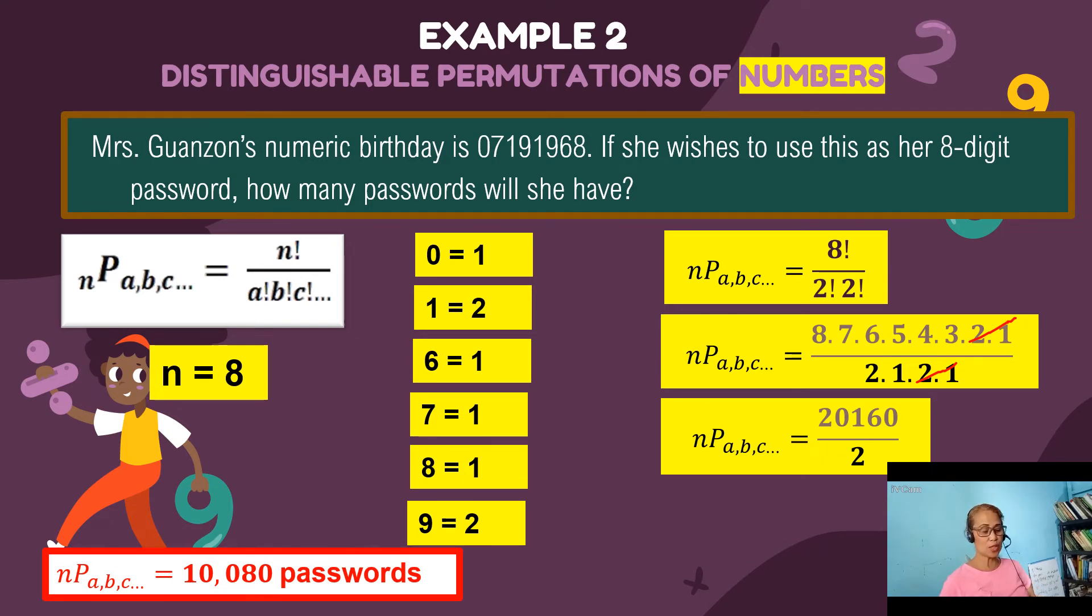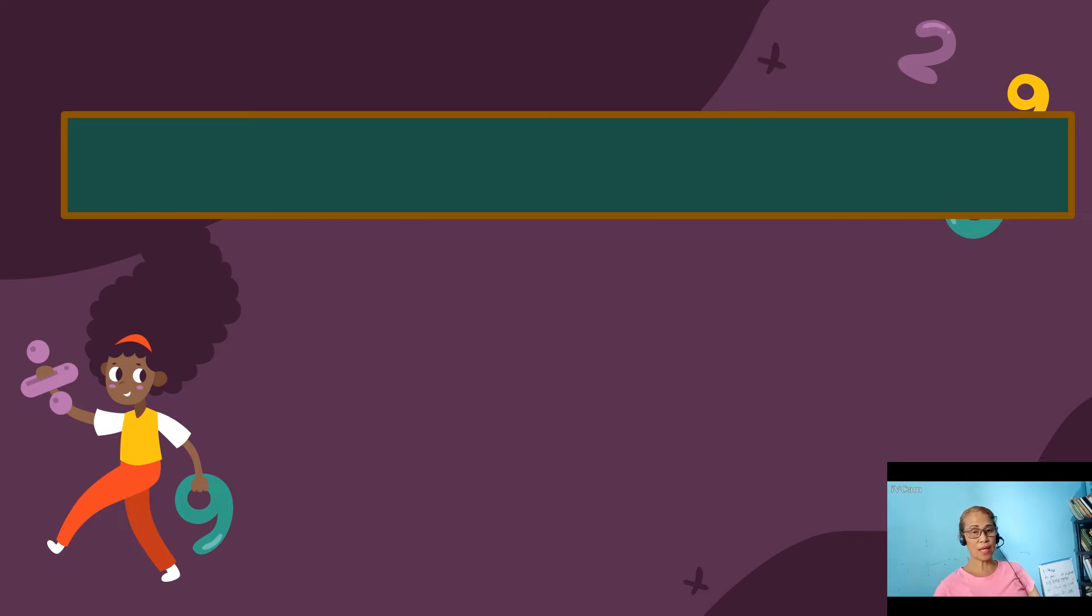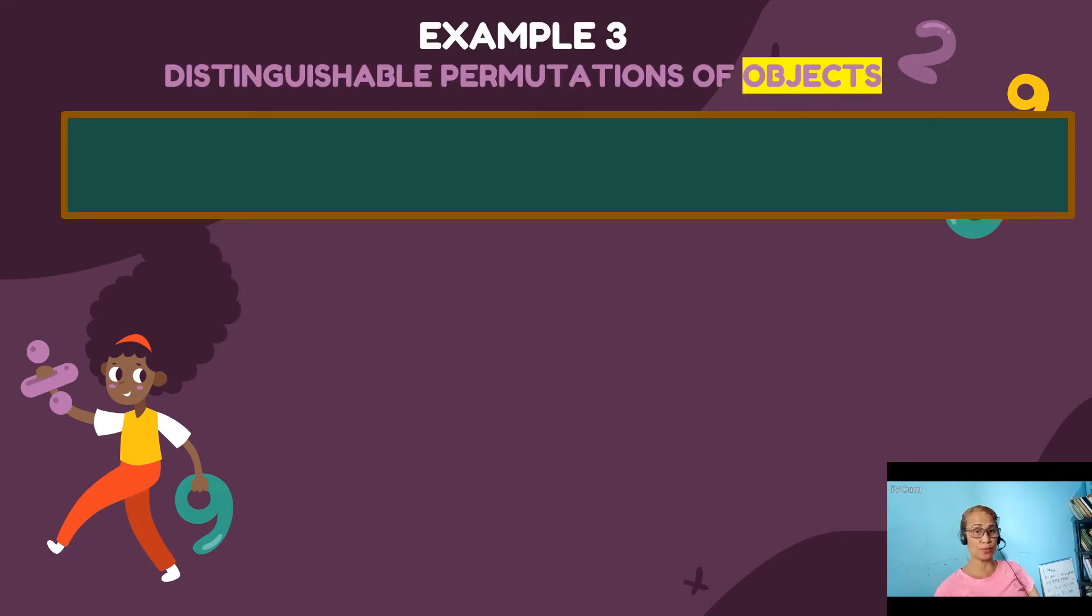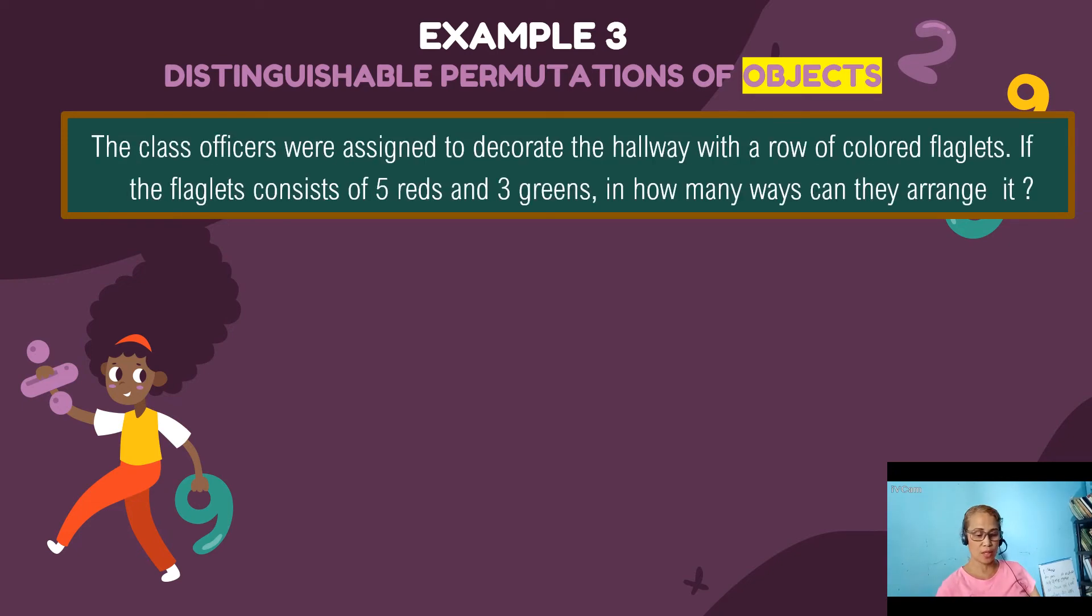So let's move. Now example number three, let me show you how this distinguishable permutation formula works with similar objects. So the class officers were assigned to decorate the hallway with a row of colored flaglets. If the flaglets consists of five reds and three greens, in how many ways can they arrange them in a row?